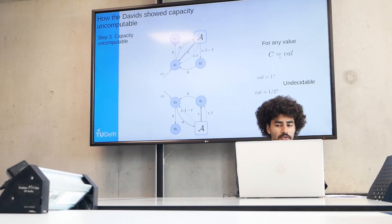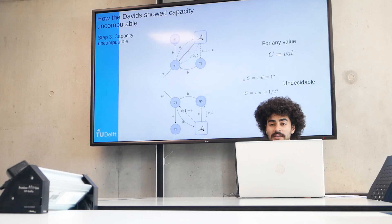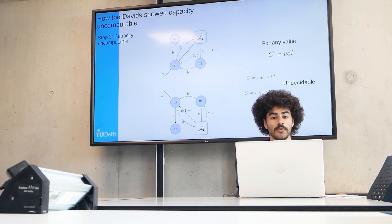For this definition, the capacity of the channel is equal to the value of the automaton. And since it's undecidable whether the value is one or half, it's undecidable whether the capacity is one or half, which implies that capacity is uncomputable to within precision one over four.